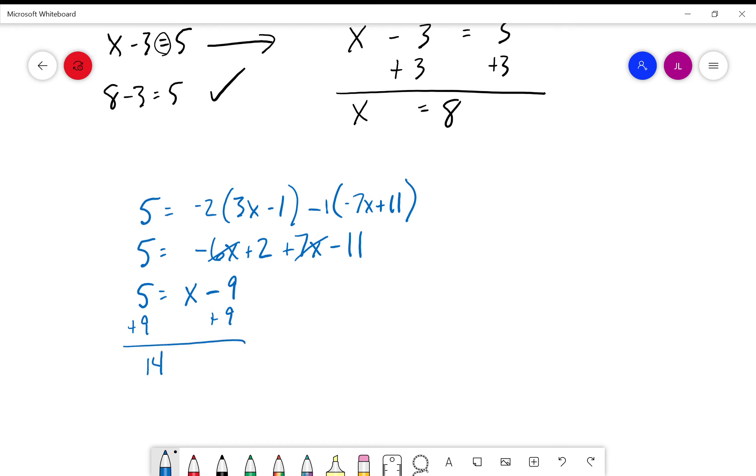And if we want to see if this is right, we plug it back in. Negative two times three times fourteen minus one, minus negative seven times fourteen plus eleven. And if we solve through here, three times fourteen is forty-two, minus one is forty-one, minus negative seven times fourteen is negative ninety-eight.